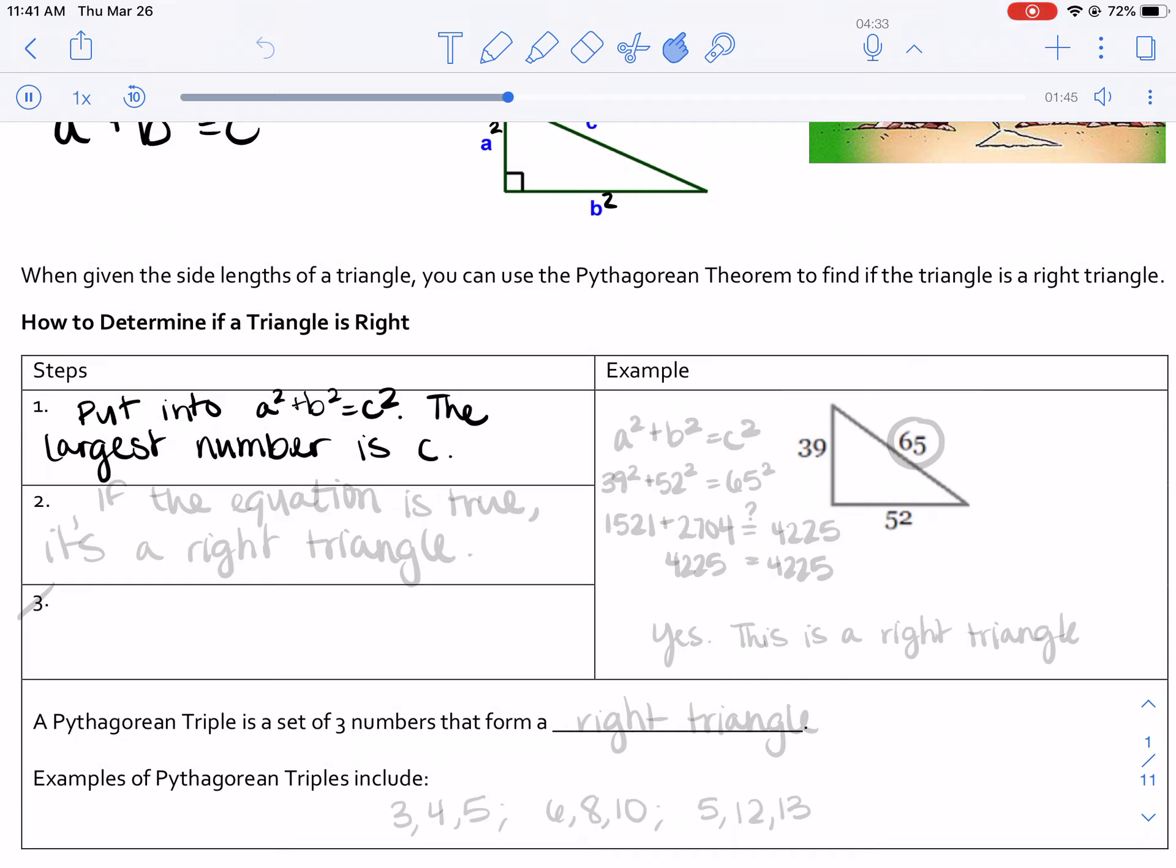So when you put it in, if the equation is true, it's a right triangle. And we don't even need a step three. That's how easy this is.